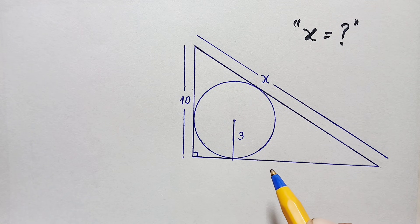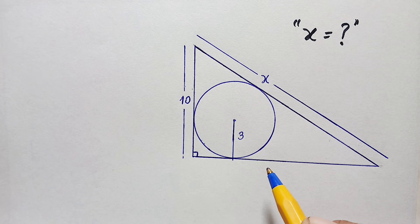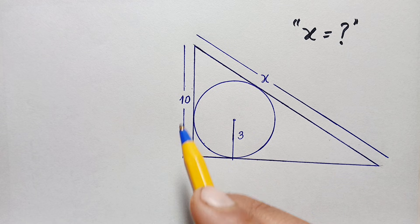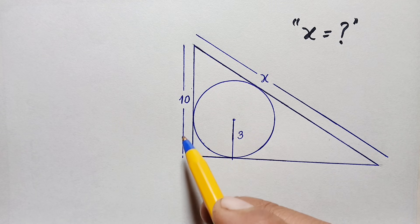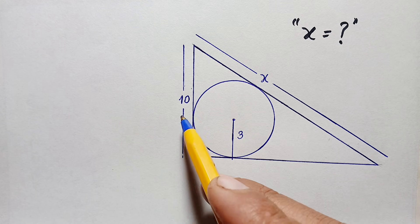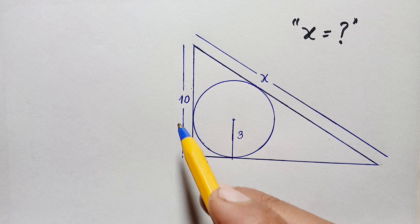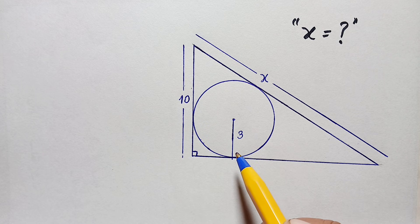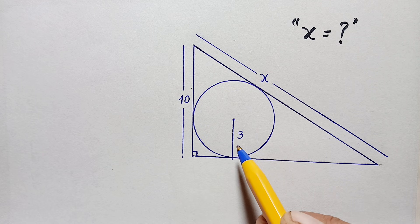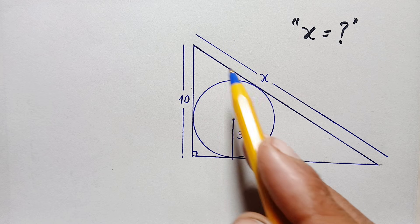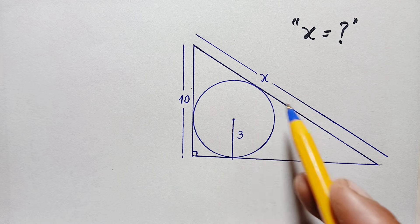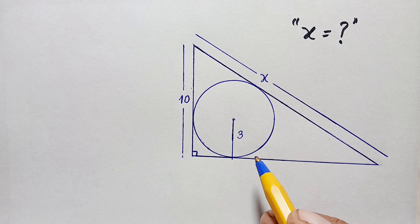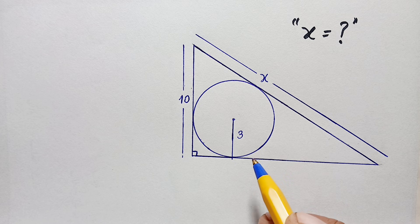Hello everyone, welcome. Today we have a very beautiful geometry math problem. We have a right angle triangle with its height or perpendicular of 10 units, and there is a circle inside the triangle whose radius is 3 units. Our target is to find the hypotenuse of this right angle triangle — the value of x.